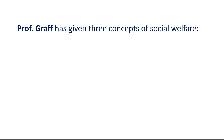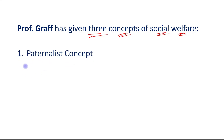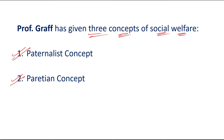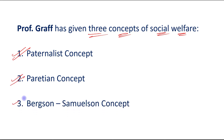Professor Graff has given three concepts of social welfare. The first one is the paternalist concept, the second one is the Paretian concept, and the third one is the Bergson-Samuelson concept. Let's see them one by one.